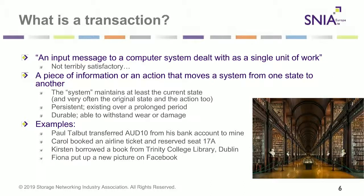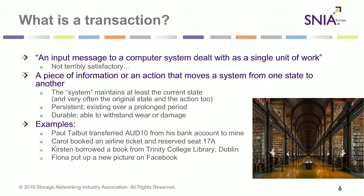My wife Carol might want to book an airline ticket and reserve a particular seat, say seat 17A — that's a classic type of transaction. My daughter might want to borrow a book from Trinity College Library in Dublin, one of the most magnificent buildings I've ever been in. If you borrow a book from there, they're going to know exactly who's borrowing it, where it's going, and when it's going to be returned. Or my other daughter might want to put up a new picture on Facebook. These are all types of transactions — wide and varied — but basically, a piece of information that moves a system from one state to another, and we record that fact.